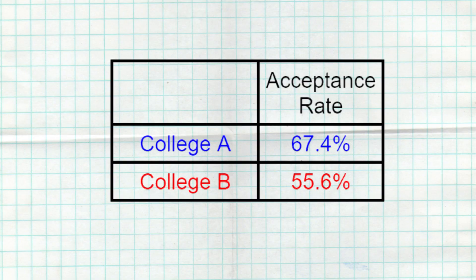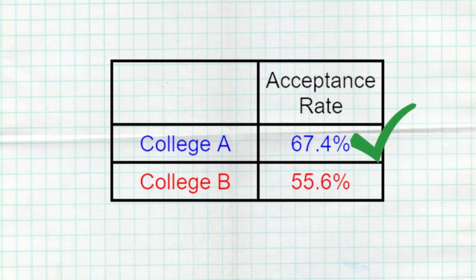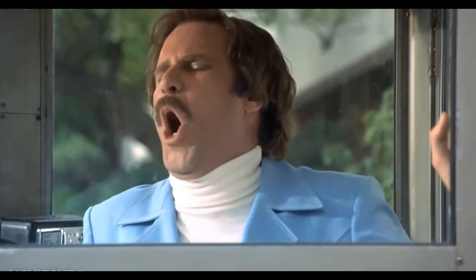But hold on a second — when we now combine all of the data together, combining all the ethnicities for College A and all the ethnicities for College B, we see that the overall acceptance rate regardless of ethnicity at College A is higher than College B. I'm in a glass case of emotion! How the heck is this possible? Welcome to Simpson's Paradox.